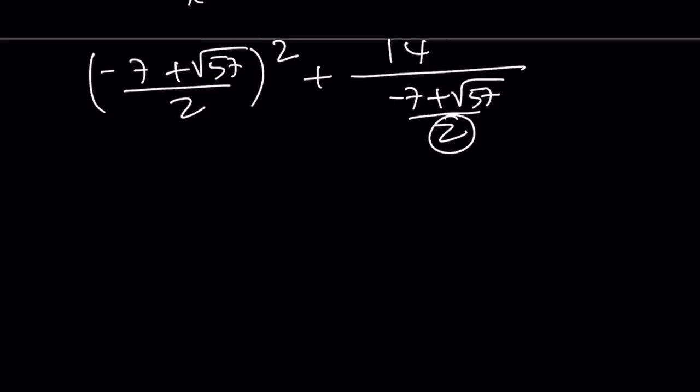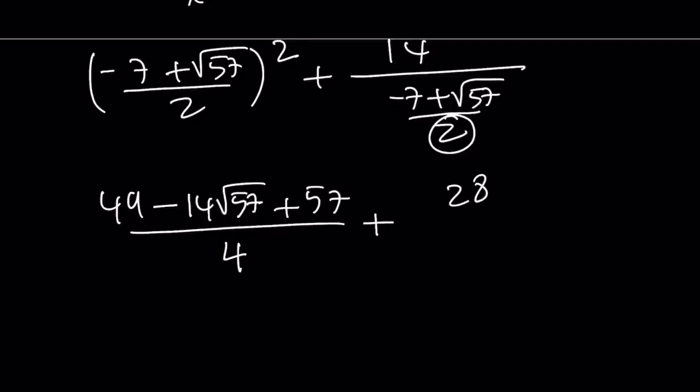Since it's kind of like a plus b quantity squared, we can write it as a squared minus 2ab, which is going to be 14 root of 57, plus square root of 57 squared, which is 57, and that is going to be divided by 4.